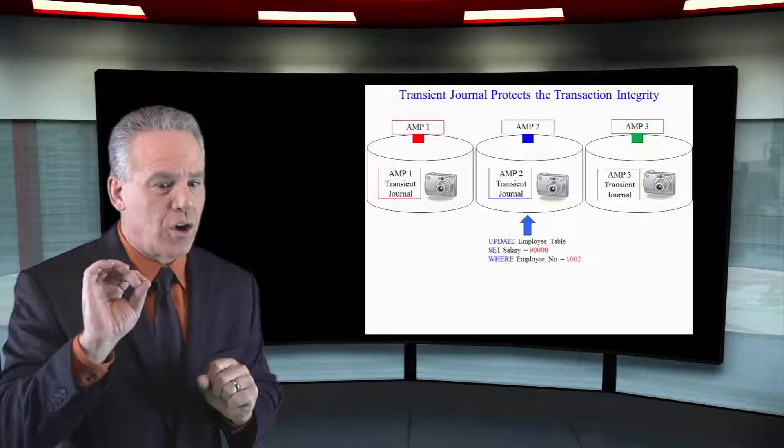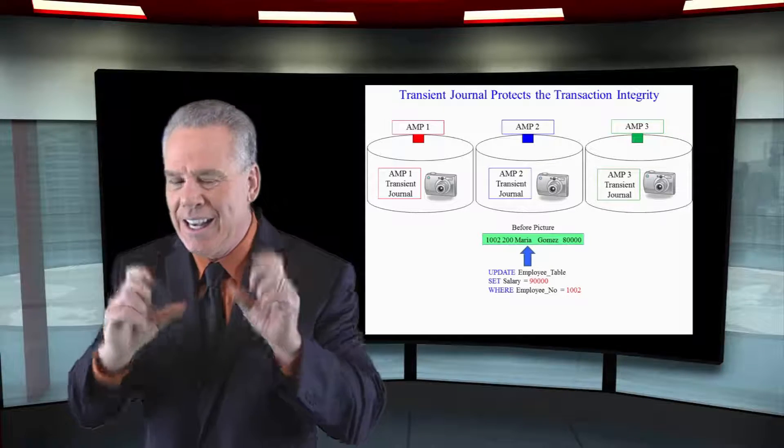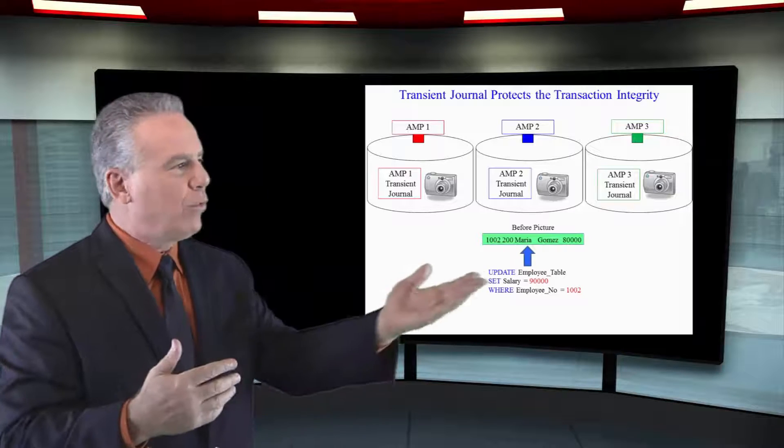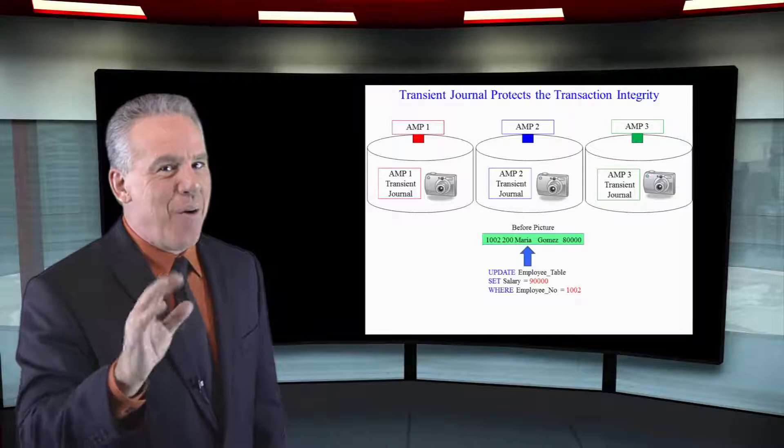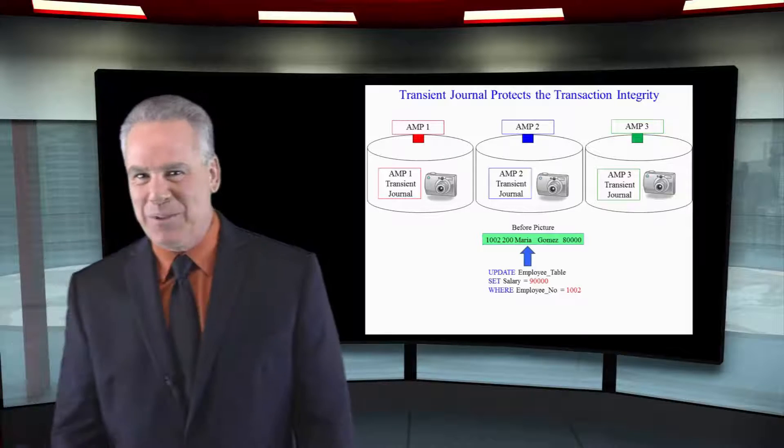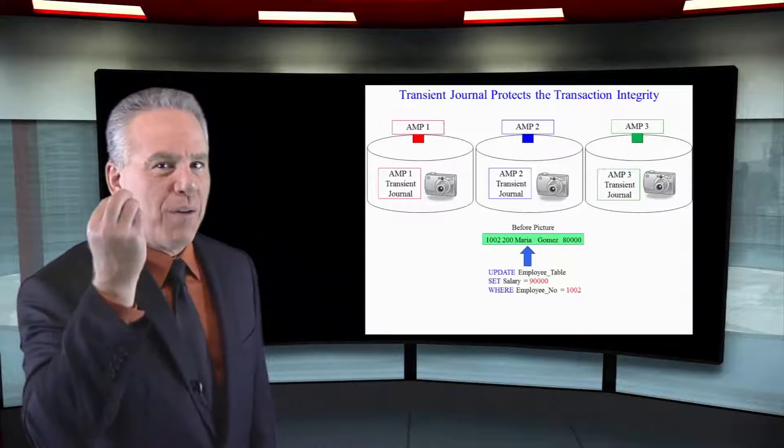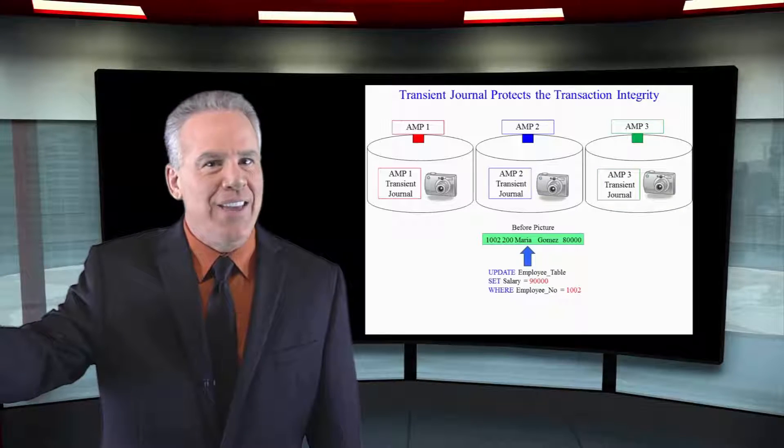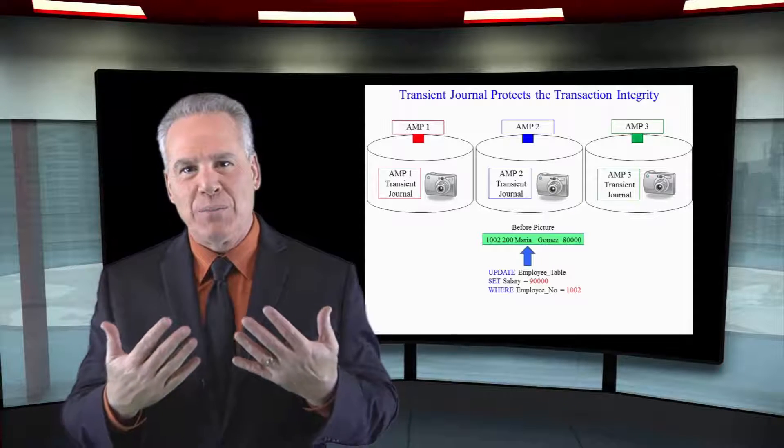So before an update occurs, they go, let me get a little picture of you. Click. I got that. If things go well, they throw the picture away. But if they need to roll back, or there's any type of system glitch, they can replace the row with what they took in the before picture, tell you there was an error in this transaction, and everything is the way it was before.